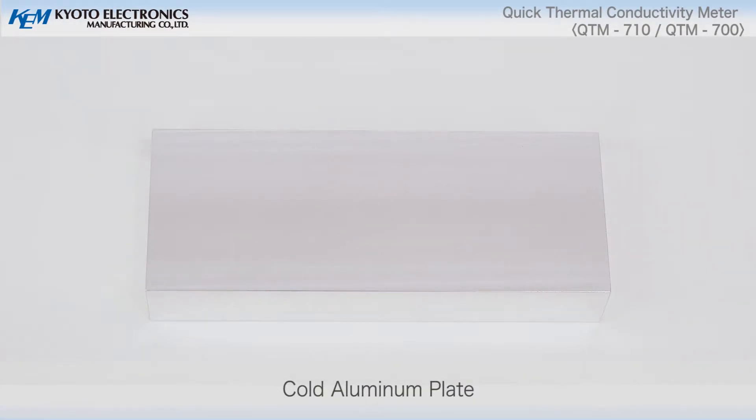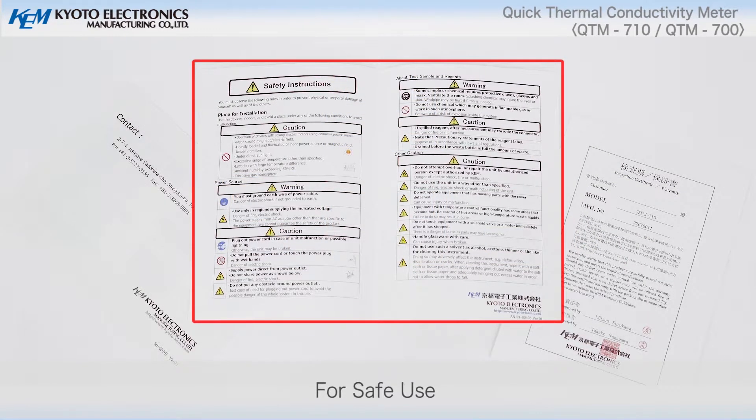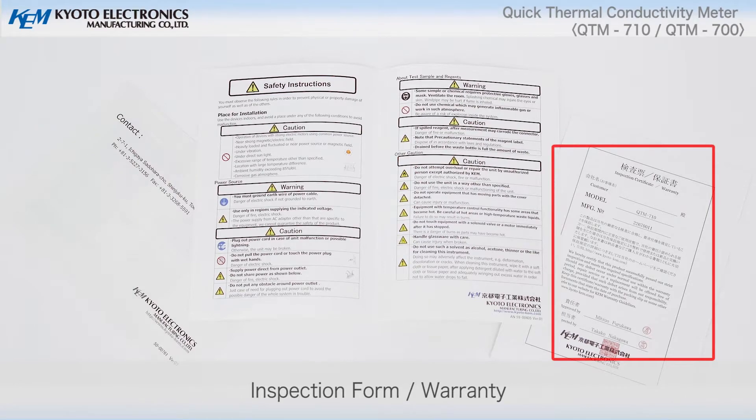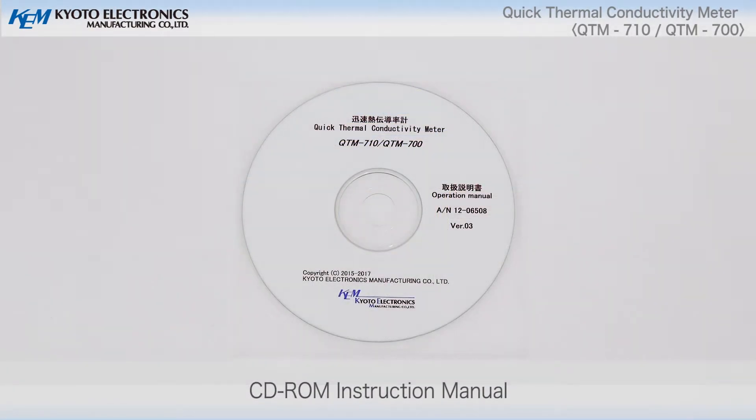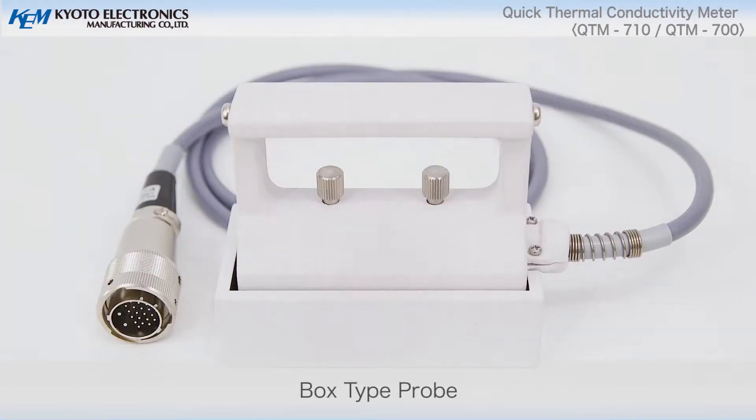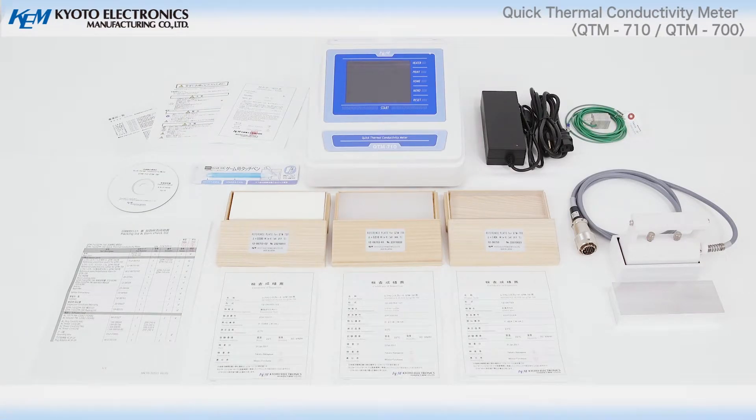Cold aluminum plate. For safe use. Office list, Inspection form, Warranty, CD-ROM, Instruction manual, Stylus, Box type probe. The above mentioned comprises all of the standard parts.